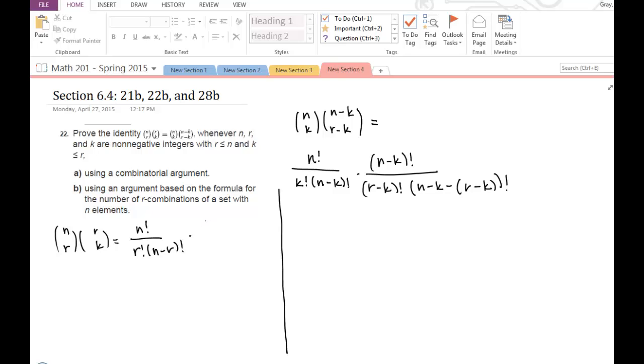And r choose k is just r factorial divided by k factorial times r minus k factorial.